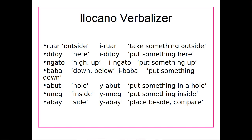We also have three words: 'abut' meaning hole, 'uneg' meaning inside, and 'abe' meaning side. These take a different form of the 'e' prefix that we saw in the first four words. Despite having this different form — 'y' instead of 'e' — it gets the same meaning. So 'abut' becomes 'jabut' (put something in a hole), 'uneg' becomes 'yuneg' (put something inside), and 'abe' becomes 'jabe' (place something beside or compare).